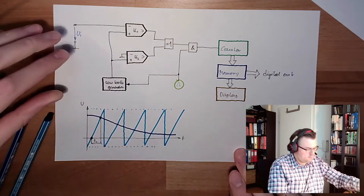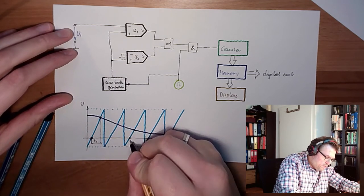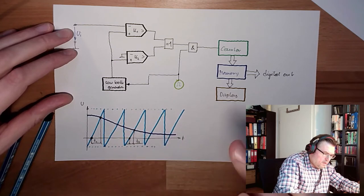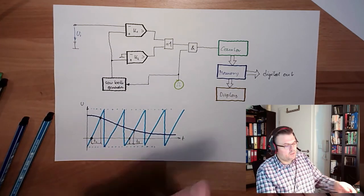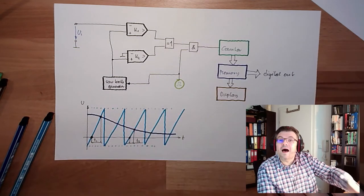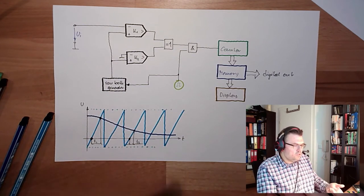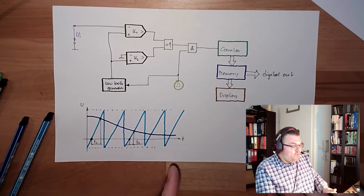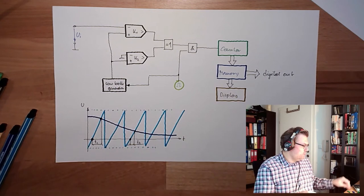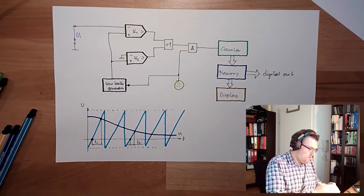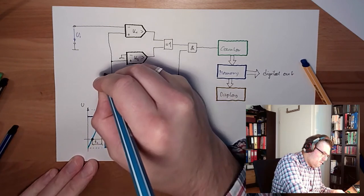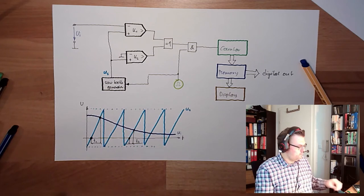The counter value was now counted for this period of time, t1. Here we start counting, here we stop counting. Here we only have a shorter period of time, t2. If it's a longer period of time, the counter will count to higher values. If it's a shorter period of time, the counter will not count to that high values. Suddenly the counter value is reflecting how big the input voltage UI was. This here is US, the sawtooth.